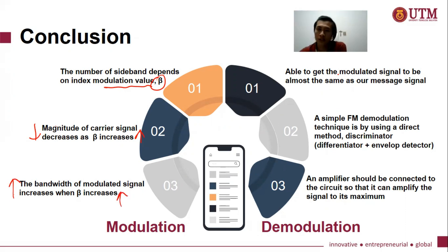For demodulation, the conclusion will be we are able to get the modulated signal to be almost the same as our message signal. And the second one, a simple FM demodulation technique is by using a direct method, which is the discriminator, by having the differentiator and envelope detector in the circuit. And last but not least, an amplifier should be connected to the circuit so that it can amplify the signal to its maximum.